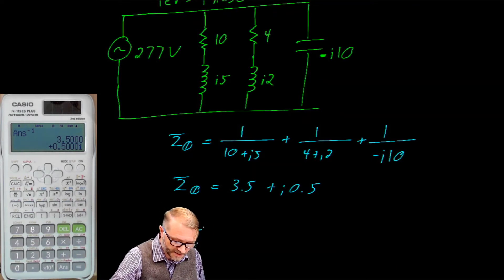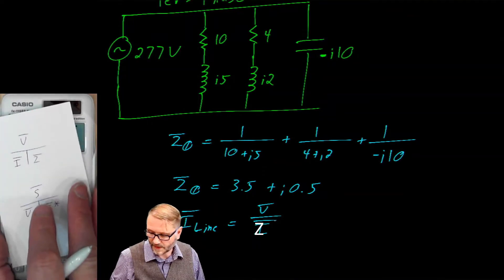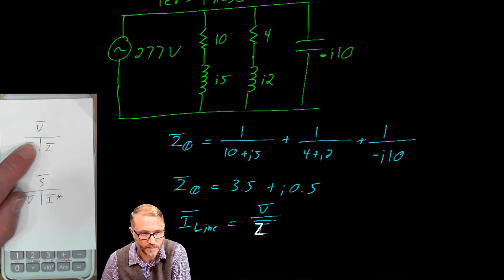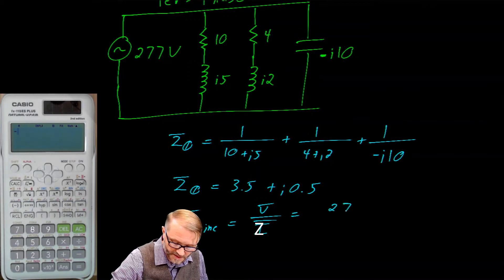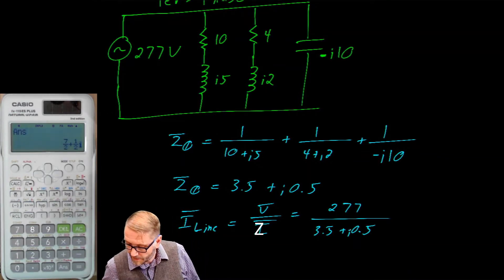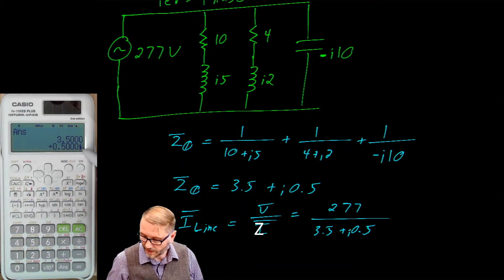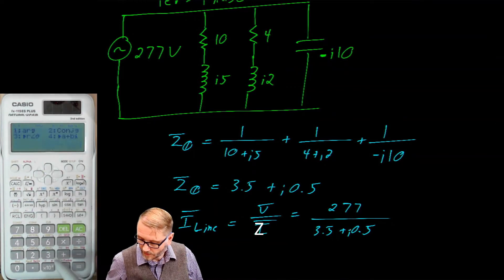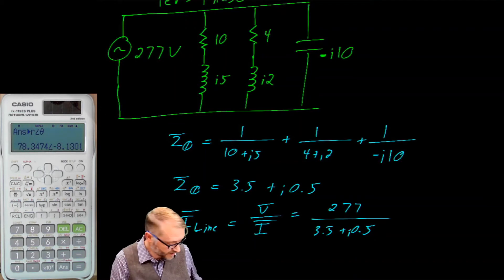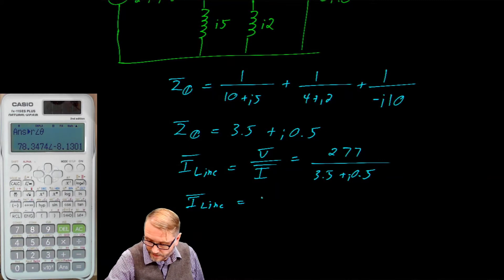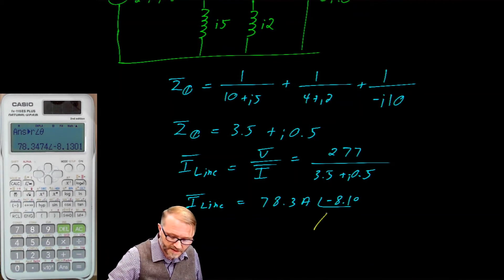The line current equals voltage divided by impedance: 277 ÷ (3.5 + j0.5) = 78.3 amps at a phase angle of −8.1 degrees. The ELI the ICE man mnemonic tells us that a negative angle on current means this circuit acts as if it were inductive.